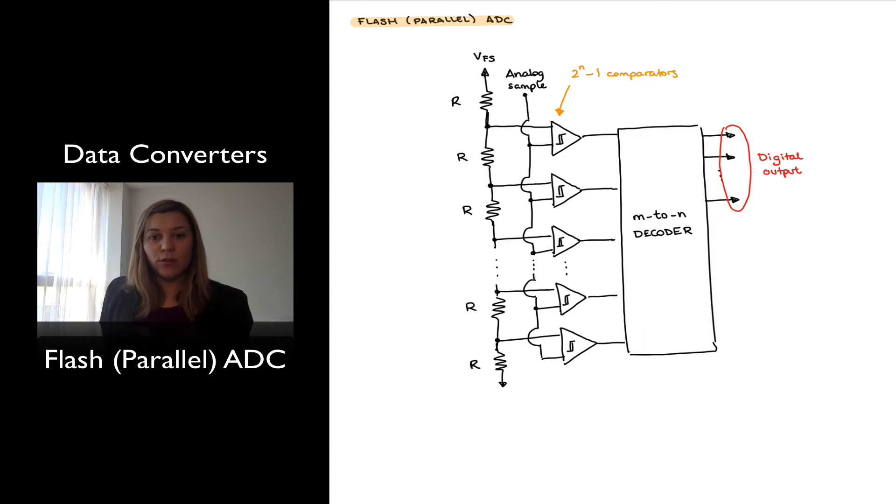You can see that for any particular value of the analog sample, I will have all the comparators which are below a particular point within that resistor ladder being in their low state, or their high state, and the comparators above that point in the ladder being in the opposite state. And then all those outputs get fed into an M2N decoder, which provides the N-bit digital output.